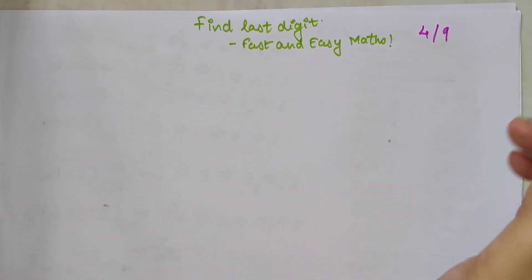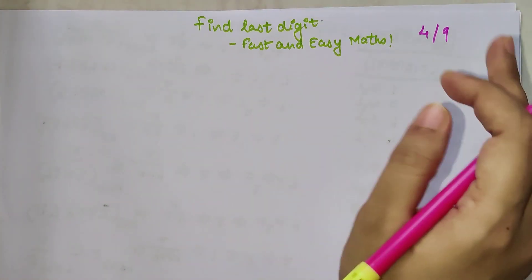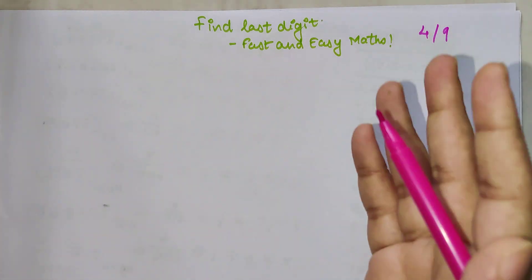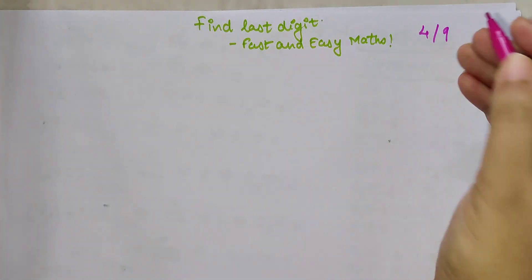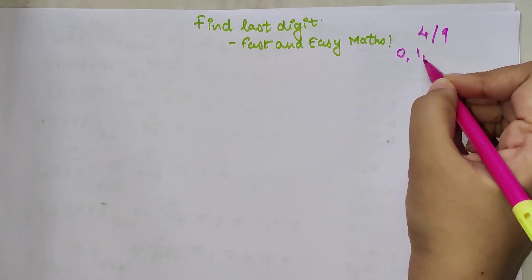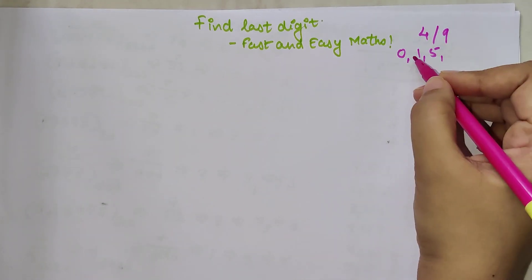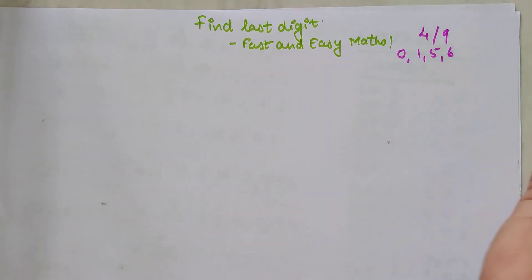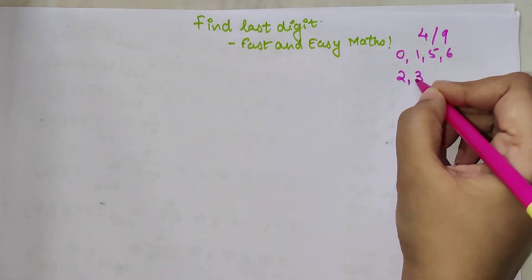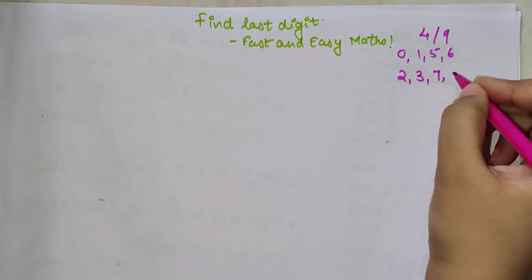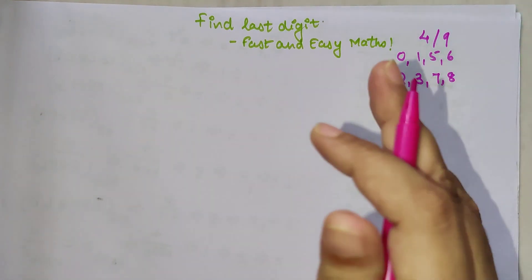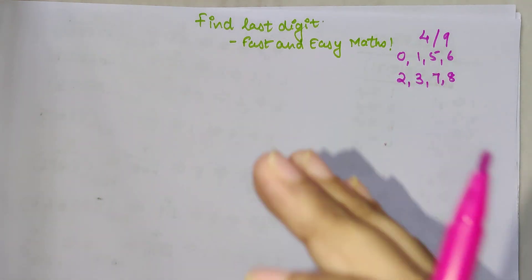Before beginning, I would like to tell you that I've already made two videos: one where I was talking about numbers that end in 1, 0, 1, 5, or 6, and the next video where I covered numbers ending in 2, 3, 7, and 8. Today we are going to do numbers ending in 4 and 9.